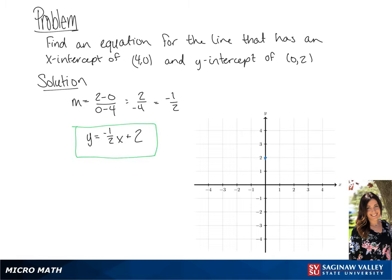To graph this, we are going to use our y-intercept, which is (0, 2), and our x-intercept, which is (4, 0), and draw a line going through these points.